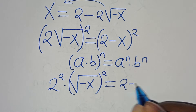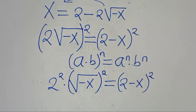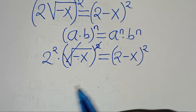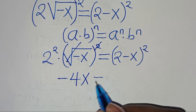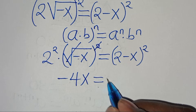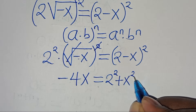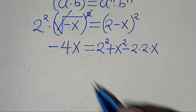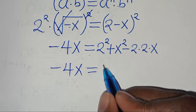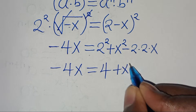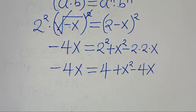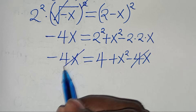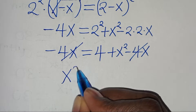This is equal to 2 minus x to the power of 2. Eliminating the square root sign, we have minus x times 4, which is minus 4x, equal to 2 minus x squared, which expands as 2 squared plus x squared minus 2 times 2 times x. So we have minus 4x equal to 4 plus x squared minus 4x. The minus 4x terms cancel on both sides, leaving x squared plus 4.